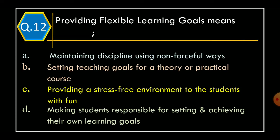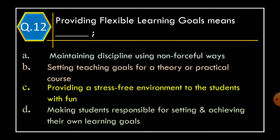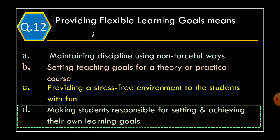Question 12: Providing flexible learning goals means — Option A: maintaining discipline using a non-forceful way; Option B: setting teaching goals for a theory or practical course; Option C: providing a stress-free environment to the students with fun; Option D: making students responsible for setting and achieving their own learning goals. The correct option is Option D: making students responsible for setting and achieving their own learning goals.